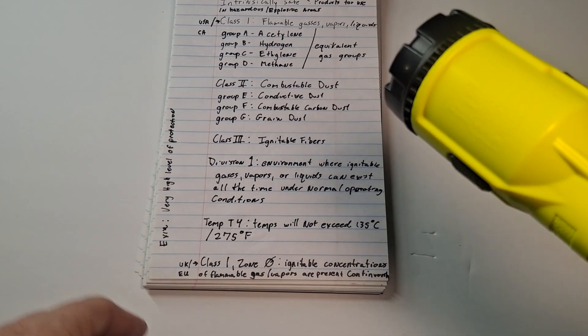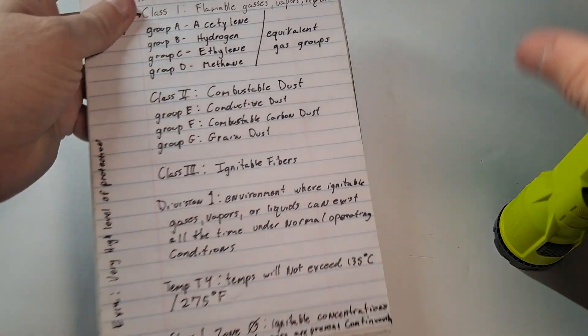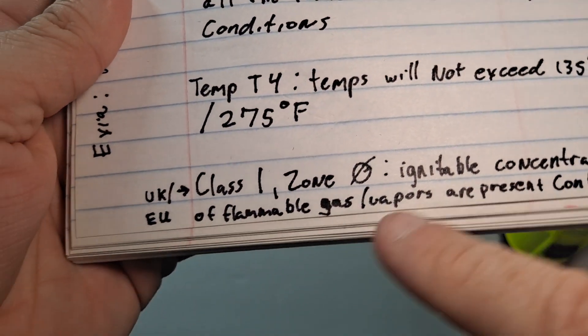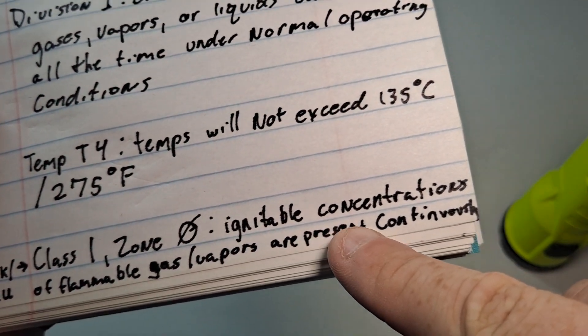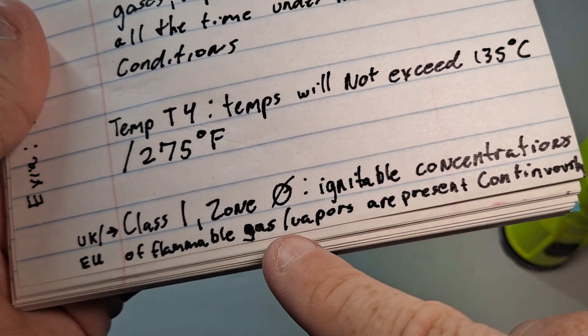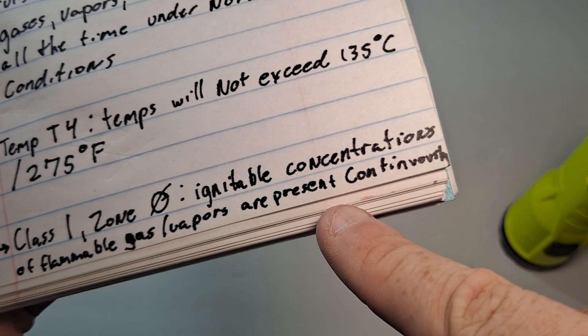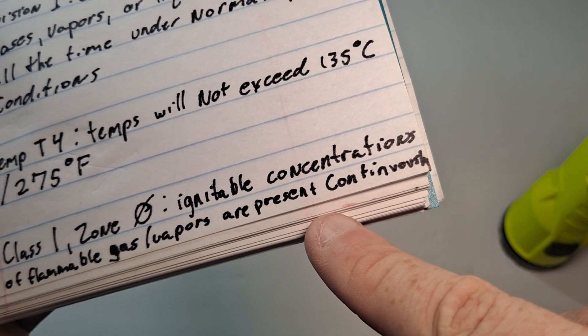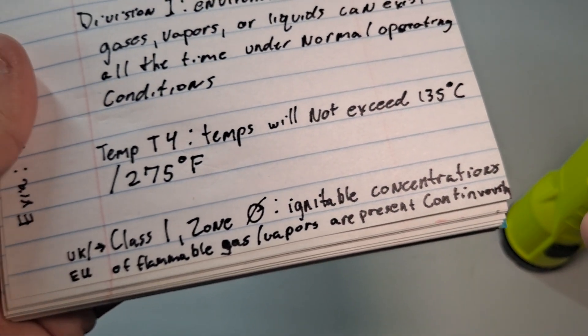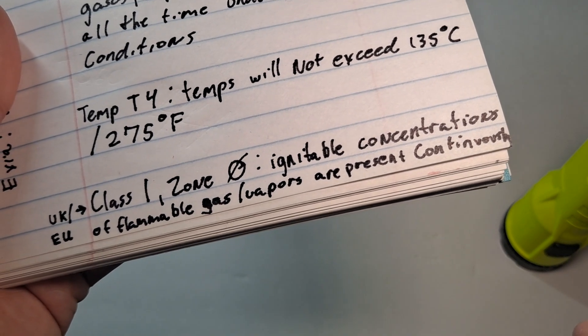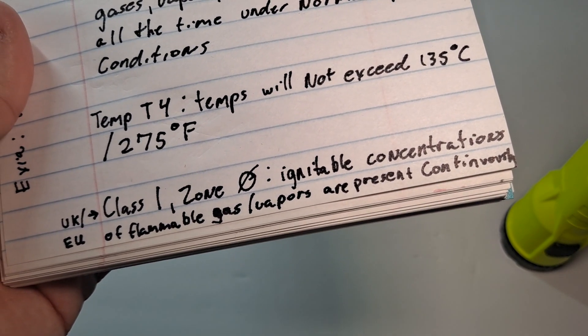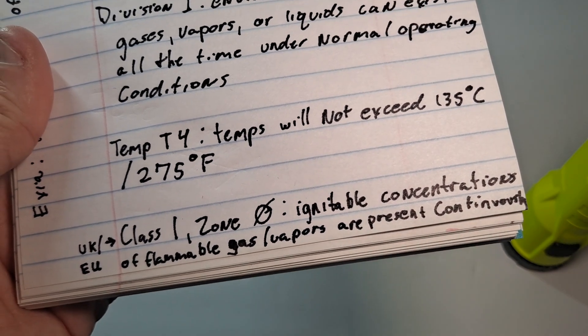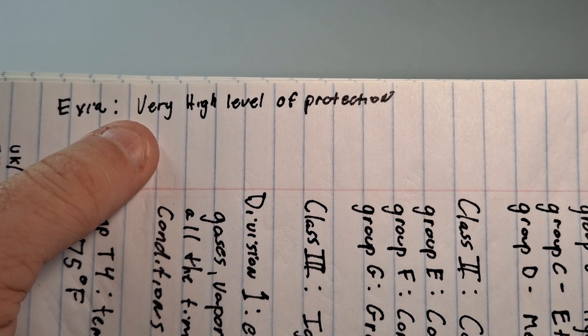Now in the bottom here, we have the United Kingdom and the European Union, Class 1, Zone 0. Ignitable concentrations of flammable gas vapors are present continuously. So it's rated for where flammable gases and vapors are present continuously. I know I literally just said the same thing, but I didn't say it clear I don't think.